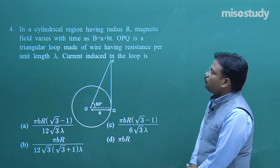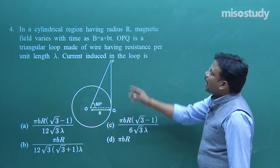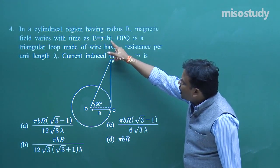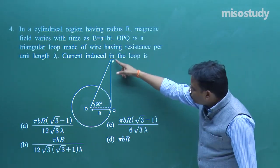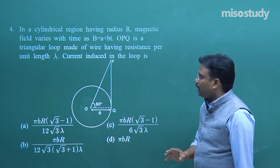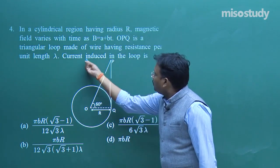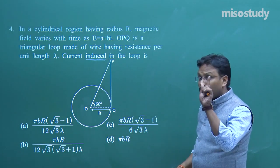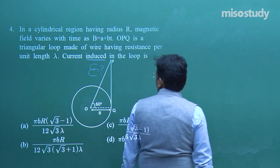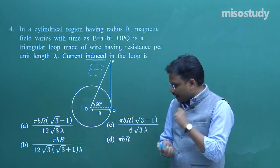What is needed is the induced EMF — only that will give the induced current. The basic idea: a wire is shaped into a triangle OPQ, which is placed inside the cylinder. This is a top view — you are watching the cylinder from above, so you see only the circle. The triangular loop is placed inside the cylinder where the magnetic field is varying.